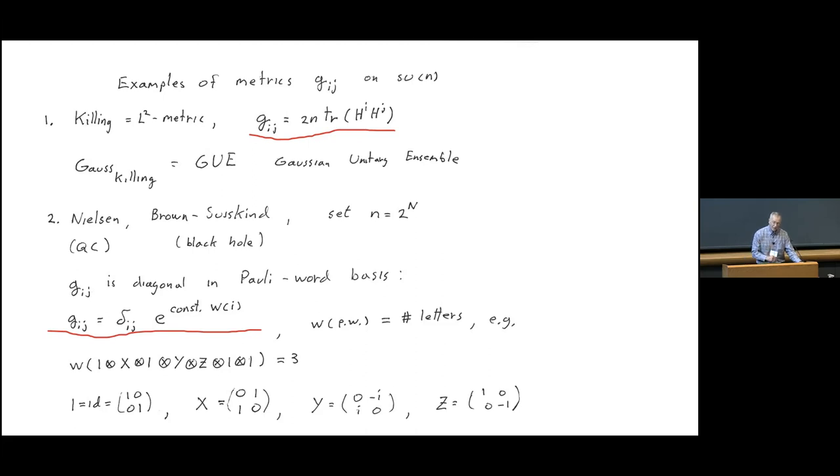I want to give one other example. I gave an example of the functional. I just want to make you comfortable with the idea of varying the metrics. And I want to give just two examples explicitly of different metrics we might be thinking of or starting with in the Lie algebra. So, one of the metrics is just the most familiar Killing metric, the L2 metric. And I wrote that at the top. And another metric to keep in mind, particularly for this audience, is what you might call the Nielsen-Brown-Susskind metric. And this is the metric that's diagonal in the Pauli word basis.